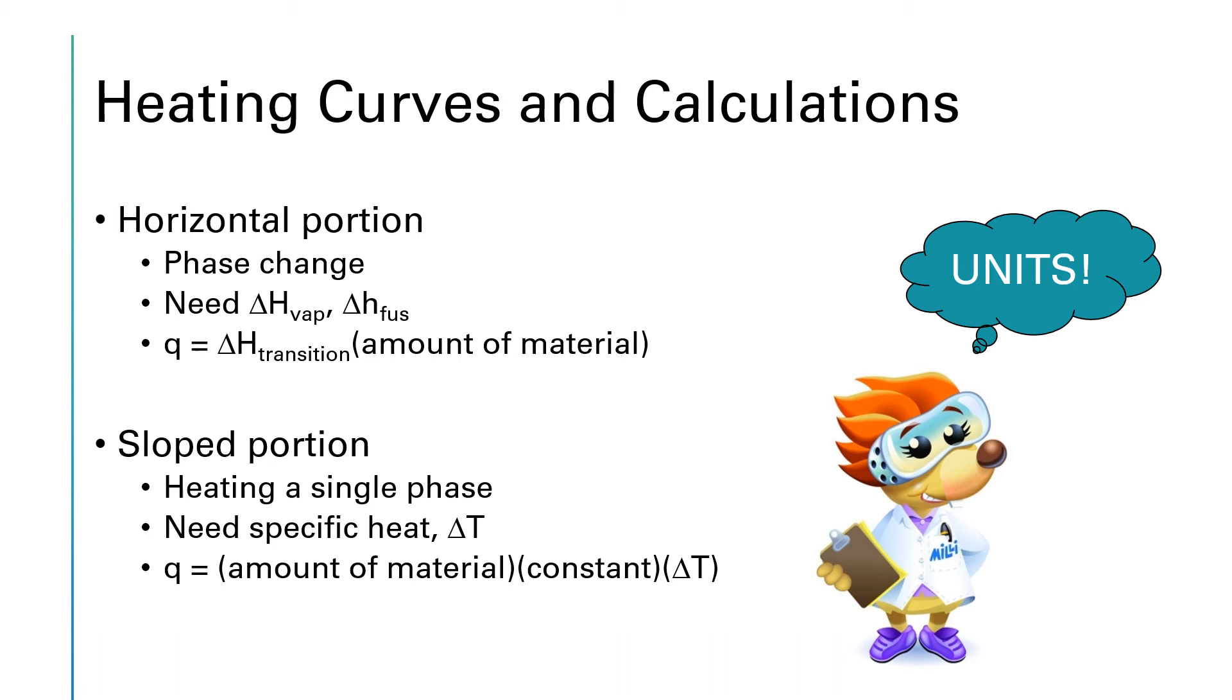If we're talking about a sloped portion, the temperature is changing and we've got to throw that ΔT into our calculation. That's where the slope portions are where you're heating or possibly cooling just a single phase, just a solid, just a liquid, or just a gas. And so to finish this calculation, you also are going to need the specific heat of the substance. That's a concept from General Chem 1 about how a material responds to adding or removing heat in terms of how much the temperature changes.